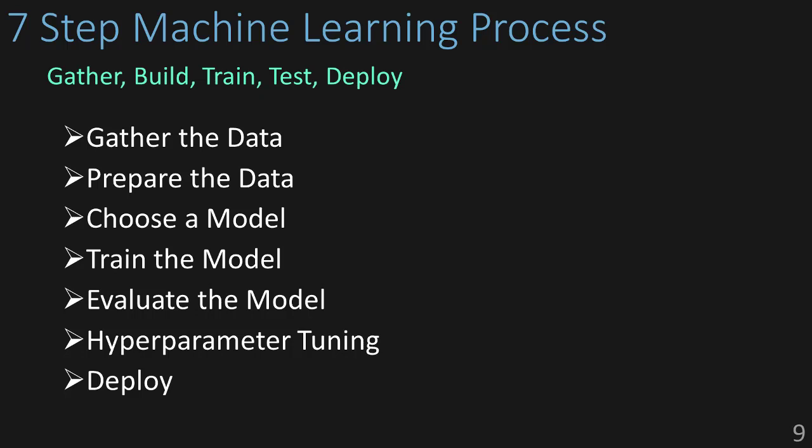What if the model doesn't perform that well or we think it could do better? This is where we start getting into hyperparameter tuning. Think of hyperparameters as little knobs and switches that allow us to make small configuration changes to the model and how it's trained. After that, we get our model to make some final predictions, and then we're ready to deploy it in production. Even though these steps are listed out in order, this is really an iterative process, meaning we can continue walking through the steps over and over again to build better, smarter models using new data that we've collected over time.